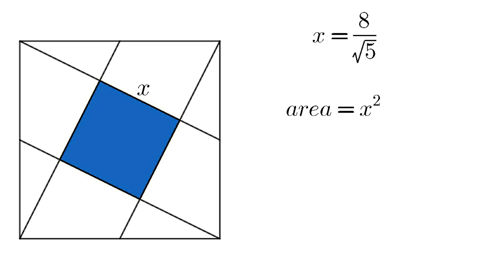So area of square equals x squared, which is equal to 64 by 5 cm squared.